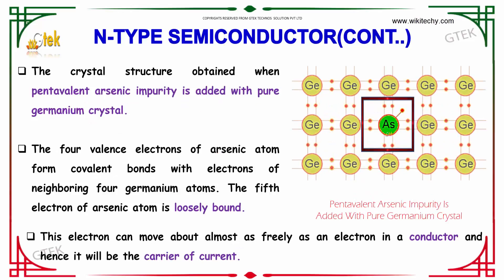The crystal structure obtained when pentavalent arsenic impurity is added to the pure germanium crystal shows that the four valence electrons of arsenic form covalent bonds with germanium. The fifth electron of the arsenic atom is loosely bound.